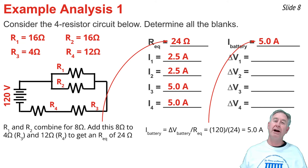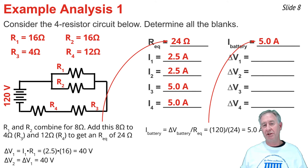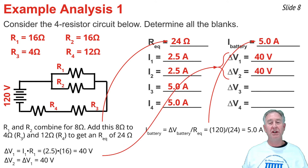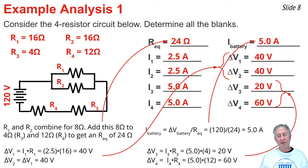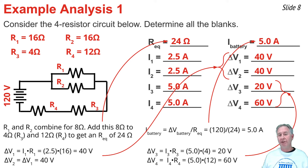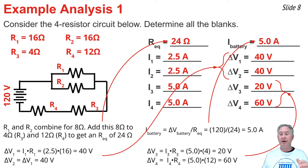Calculating voltage drops using delta V equals I times R: for the branch resistors, 2.5 amps times 16 ohms equals 40 volts. For R3 with 4 ohms, delta V equals 4 times 5 equals 20 volts. For R4 with 12 ohms, delta V equals 12 times 5 equals 60 volts. To check the work: the sum of all voltage drops must equal the battery voltage of 120 volts. Indeed, 40 plus 20 plus 60 equals 120. Correct.